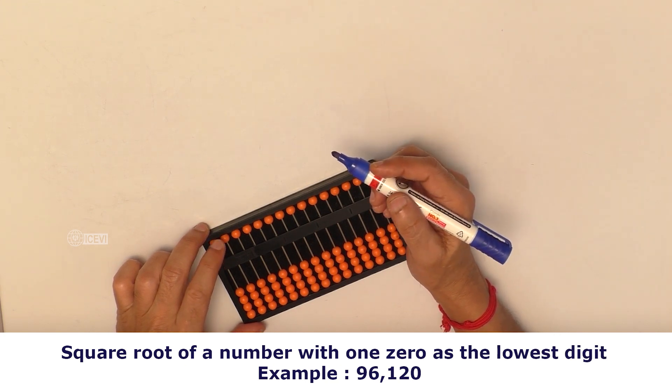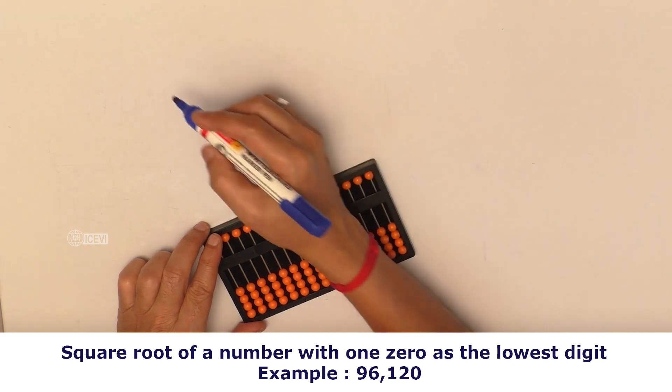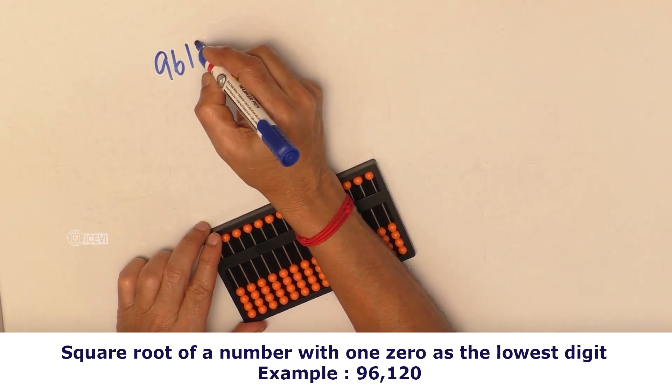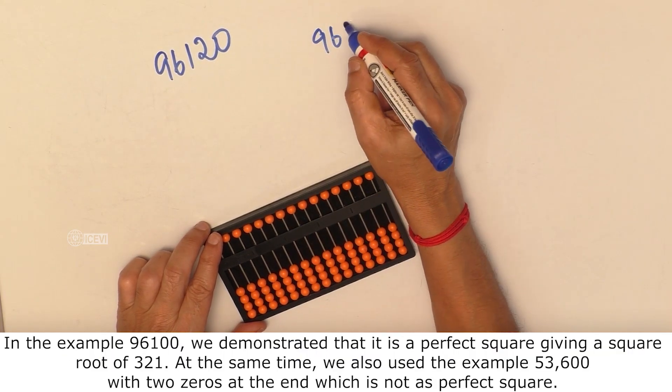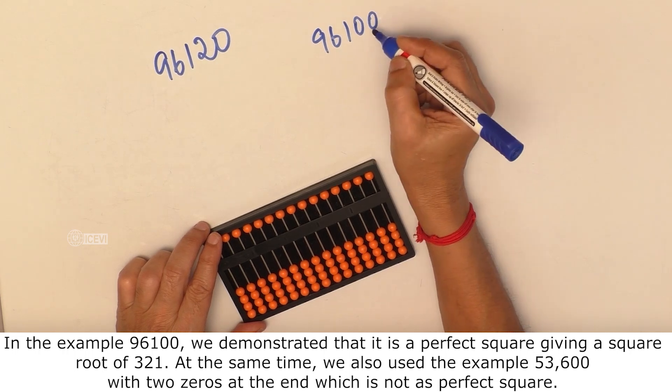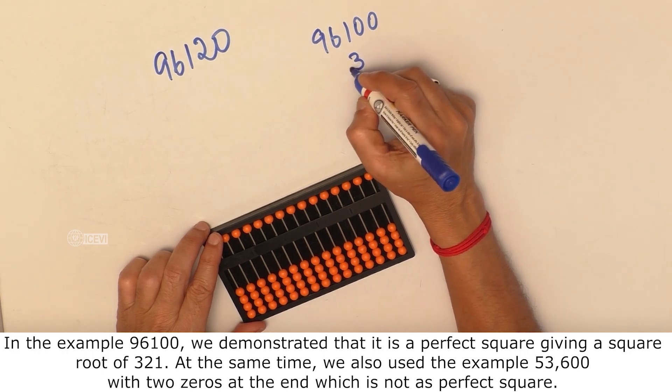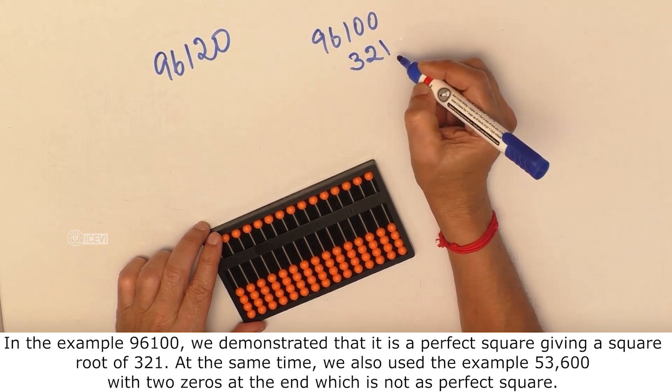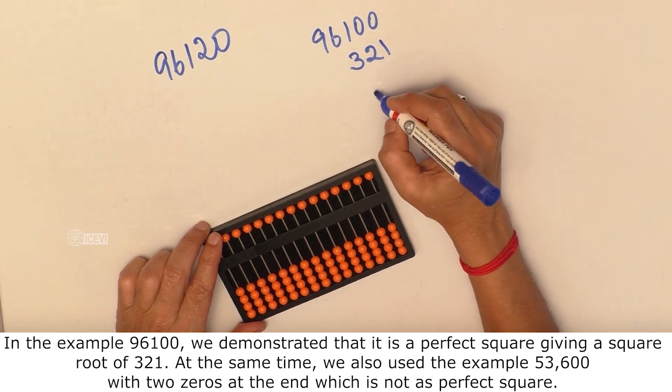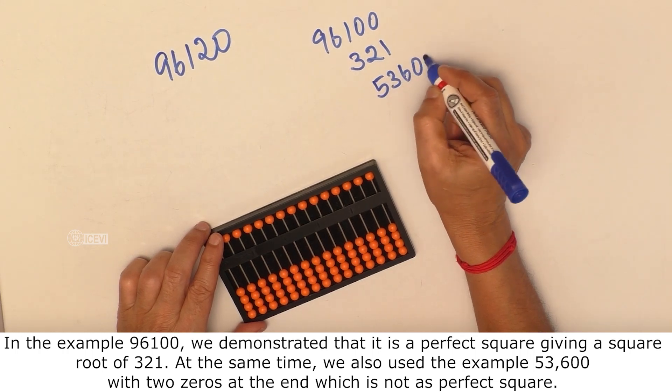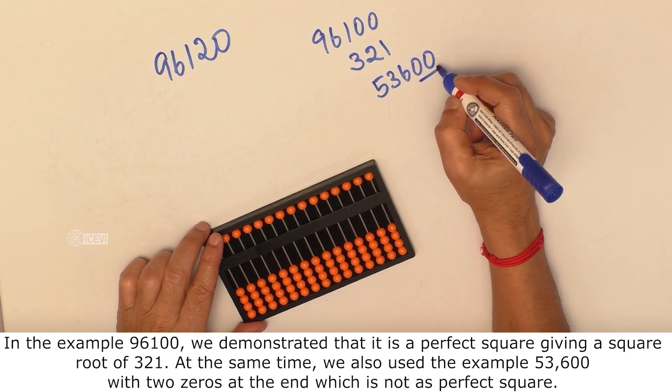Example: 96120. In the example 96100, we demonstrated that it is a perfect square giving a square root of 321. At the same time, we also used the example 53600 with two zeros at the end, which is not a perfect square.